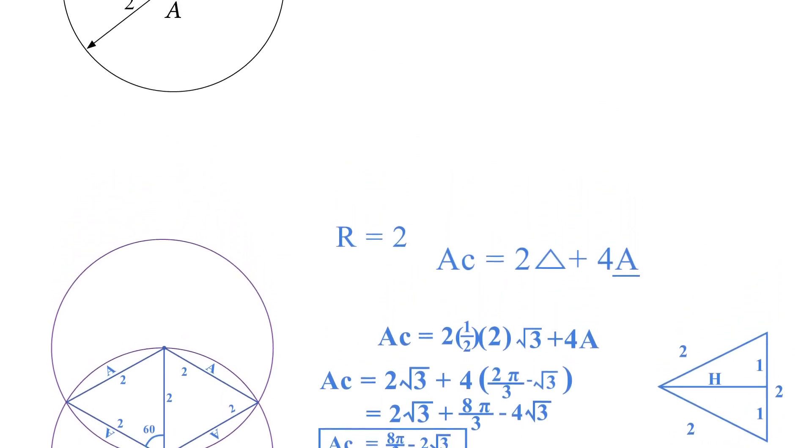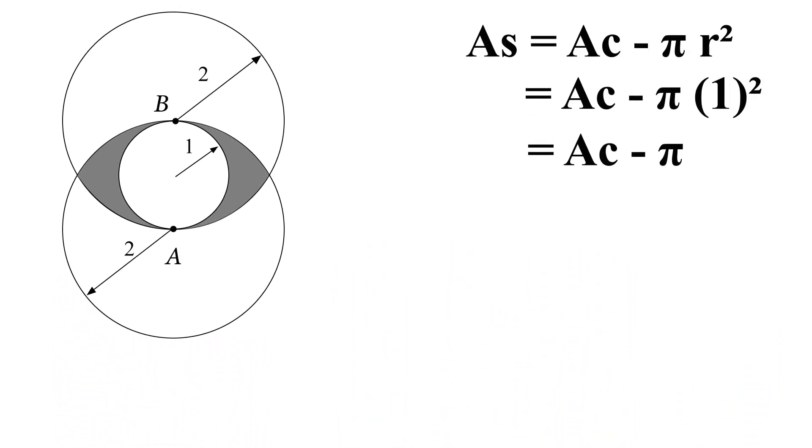So we'll take that and place that into the first part of the equation which is right here. Area of the shaded region is the area of the common region minus πr². And since the small r was 1, we got AC minus π.